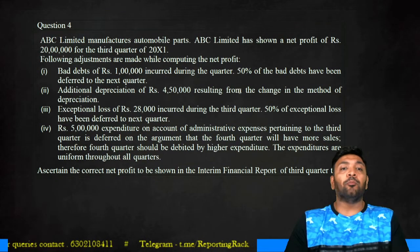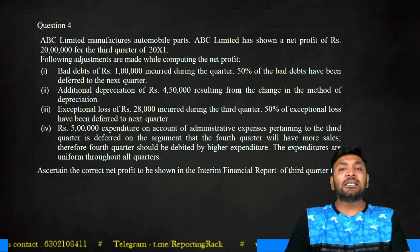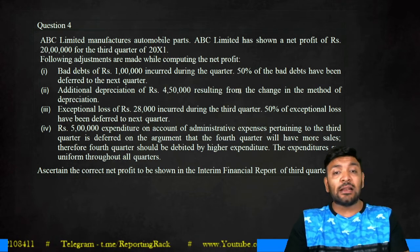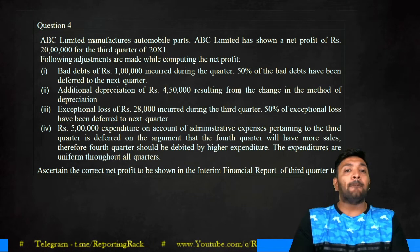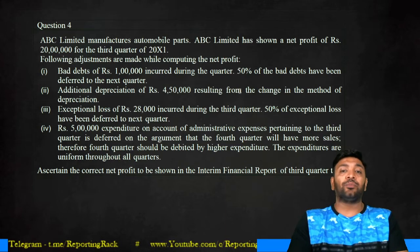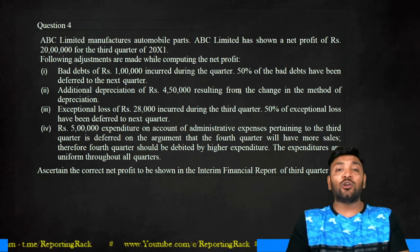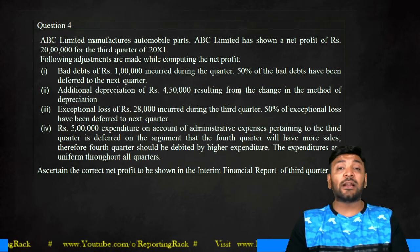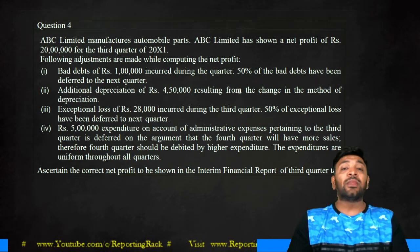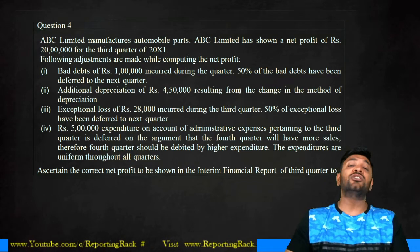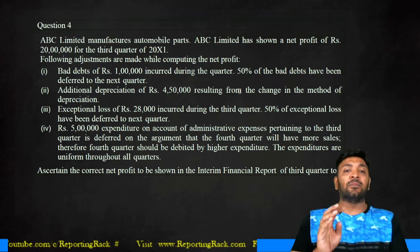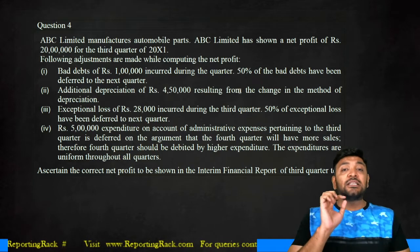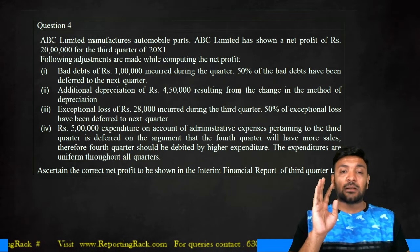BC Limited manufactures automobile parts and has a net profit of 20 lakhs in the third quarter of 2011. Adjustments were made while computing net profit: bad debts of 1 lakh were incurred during the quarter, but 50% of bad debts have been deferred to the next quarter. These are not cyclical costs and are not supposed to be deferred — if it is not deferred in annual financial statements, you are not supposed to defer it in interim financial statements. The entire 1 lakh should be charged in the current quarter.